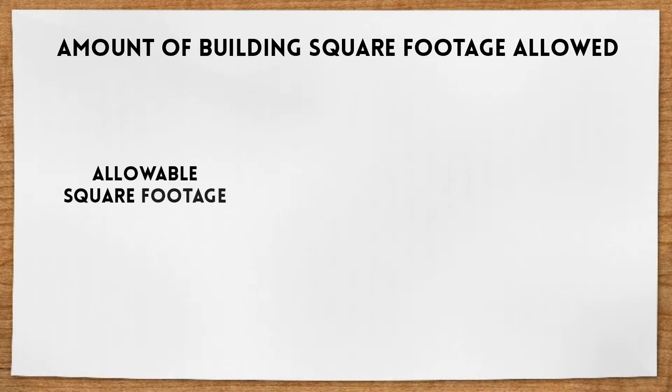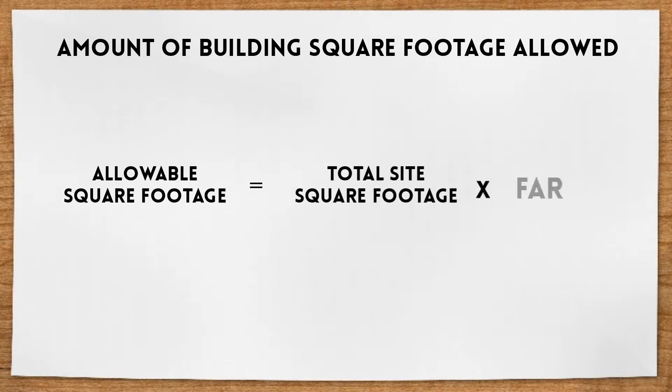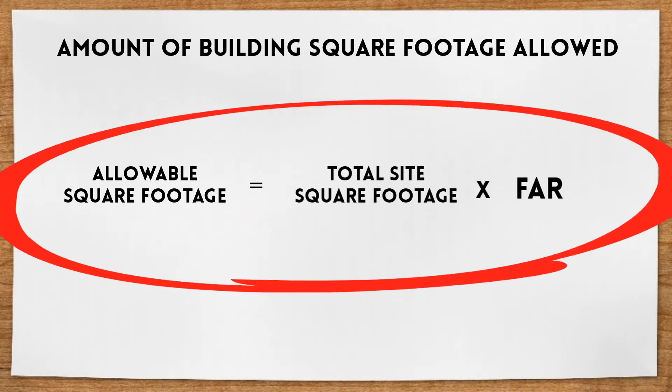The allowable square footage is equal to the total site square footage times FAR. Let's learn through an easy example.